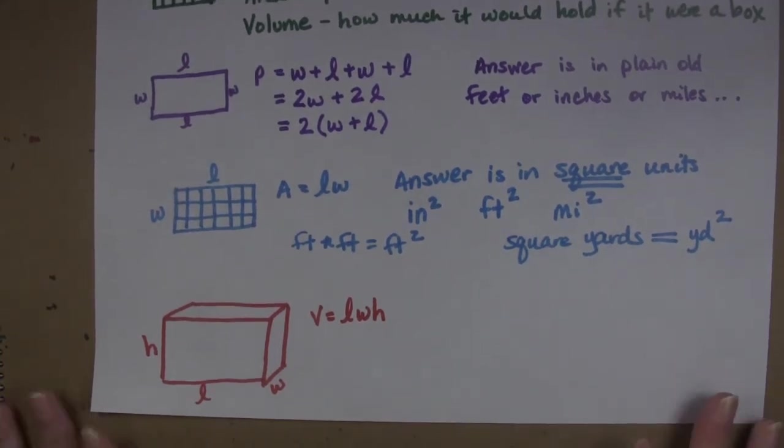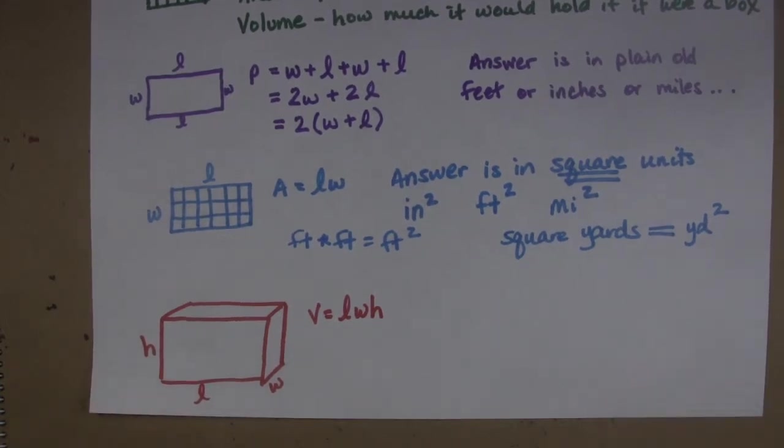Now I made it sound like that that was an actual rule but it's not. You can call this length and this width and this height if you want. It doesn't matter because all you're going to do is you're going to multiply those three numbers together. But you're going to get the dimensions going in different ways and you're going to multiply them.